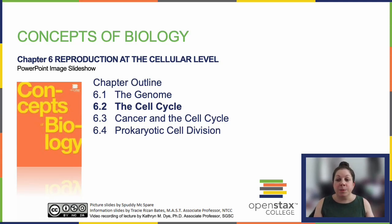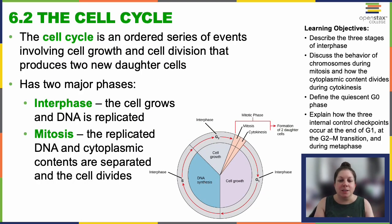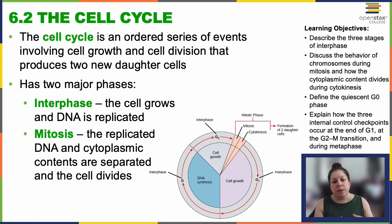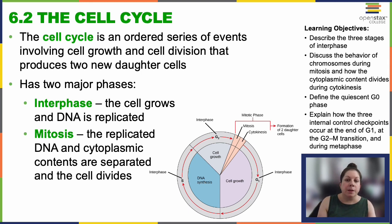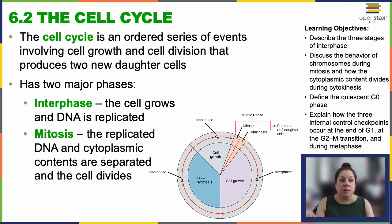Welcome back. We're going to be looking at the cell cycle in this video. The cell cycle is this well-ordered series of events that encompasses cell growth and eventually division, ultimately yielding two daughter cells. Cells destined for division progress through meticulously timed phases involving specific growth phases, DNA replication, and finally division into two genetically identical daughter cells. That's very important — genetically identical daughter cells are the product of this cell cycle.